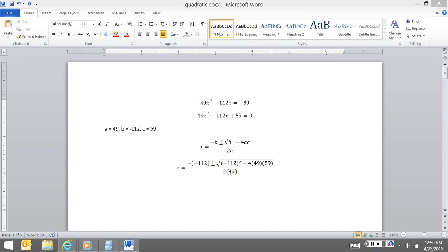Okay, we are asked to solve this equation: 49x squared minus 112x equals negative 59, 4x.